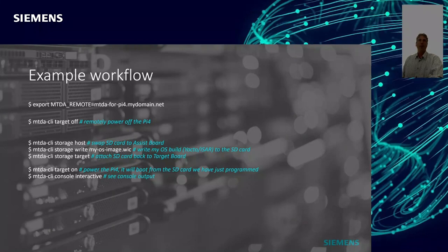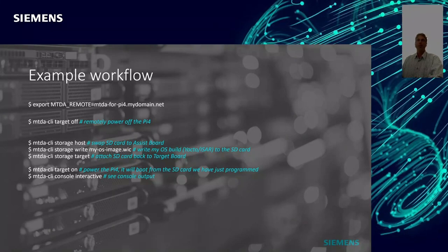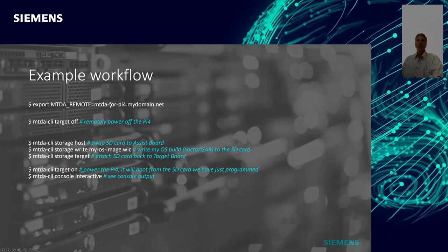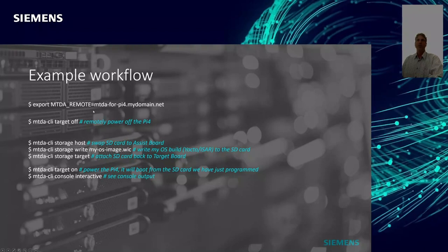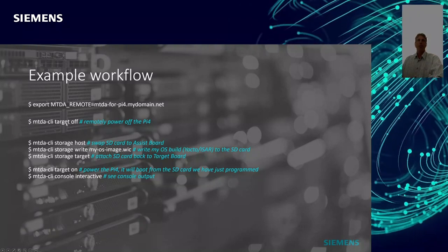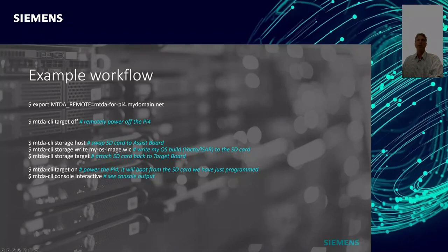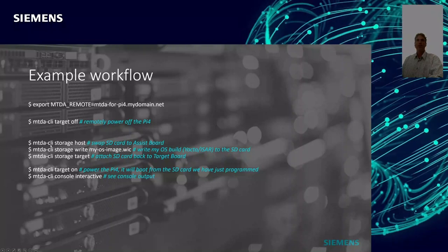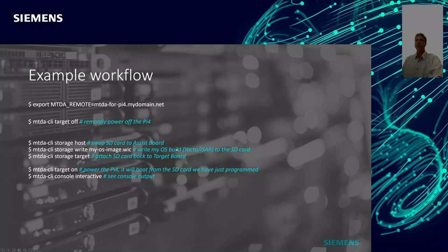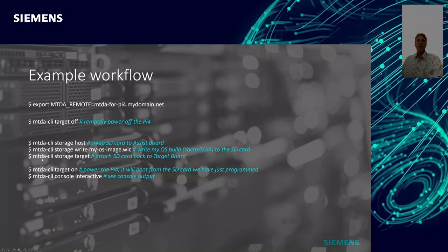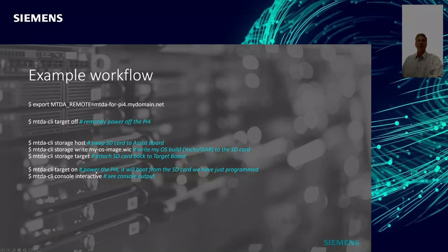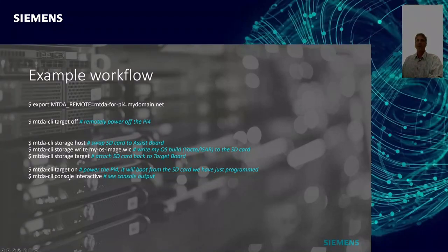Here's how it's used from the command line. It's a simple command line tool where you specify where your assist board is — a sample hostname like 'mtda-pi4'. You can turn off the board using the target off command, then put the SD card connected to the NanoPi, write a new OS image such as a WIC image built with OpenEmbedded or ISA, return the SD card to the target, and finally power on the board and see the OS booting using the interactive console that MTDA provides.